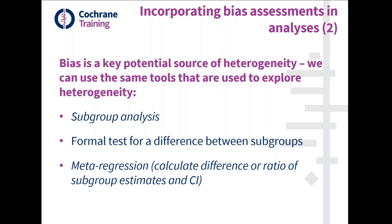The second approach uses the same tools we use to assess heterogeneity. Bias is a key potential source of heterogeneity, so we can use the same tools to explore bias: subgroup analysis with a formal test for difference between subgroups, or meta-regression, which calculates the difference or ratios of subgroup estimates and confidence intervals. Subgroup analysis is available in RevMan and is probably addressed in more detail in the Handbook chapter on heterogeneity. Meta-regression is a more complex technique, not available in RevMan, and may require statistical expertise to undertake and interpret.